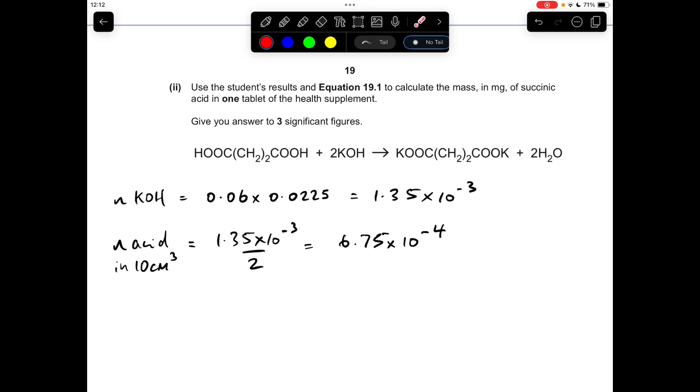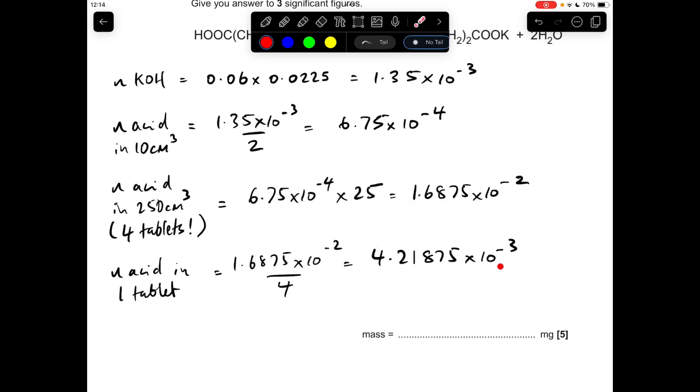Next thing we do is work out how many moles of acid are in the original 250 cm cubed solution. So to scale up from 10 to 250, we obviously multiply the moles in 10 by 25. So we get that many moles in the 250 cm cubed solution, and remember that came from four tablets. So we now need to work out the moles in one tablet. So that comes out at that many moles.